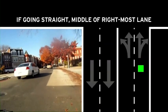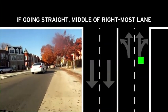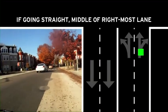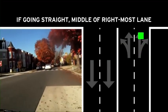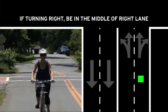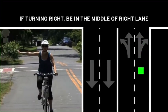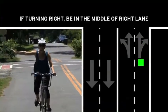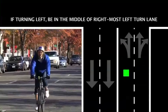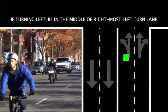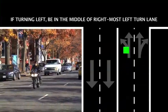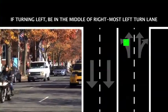If you're traveling straight through an intersection, you should be in the middle of the rightmost through lane. If you're turning right, you should be in the middle of the right lane. If you're turning left, you should be in the middle of the rightmost left-hand turn lane.